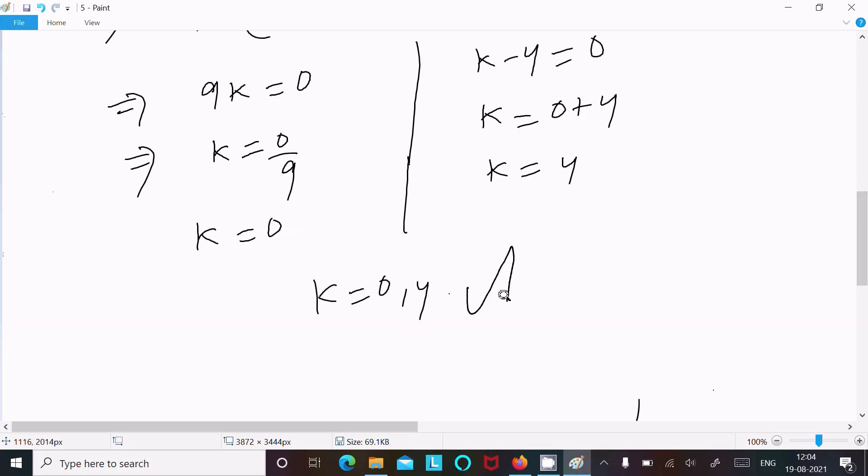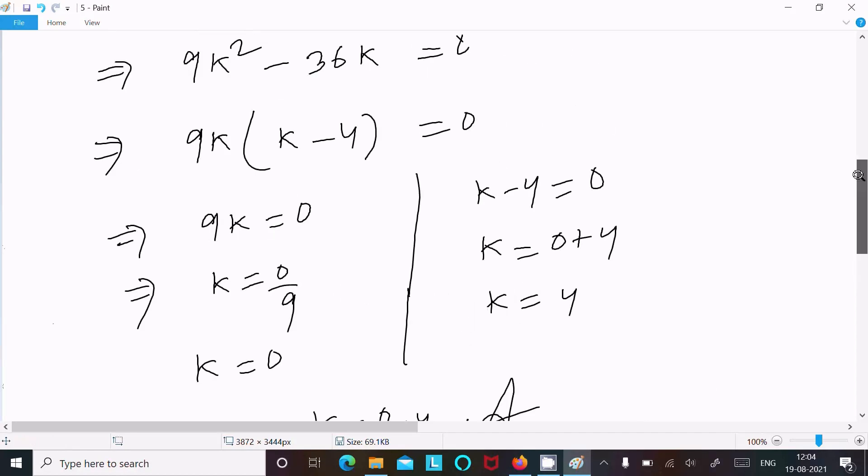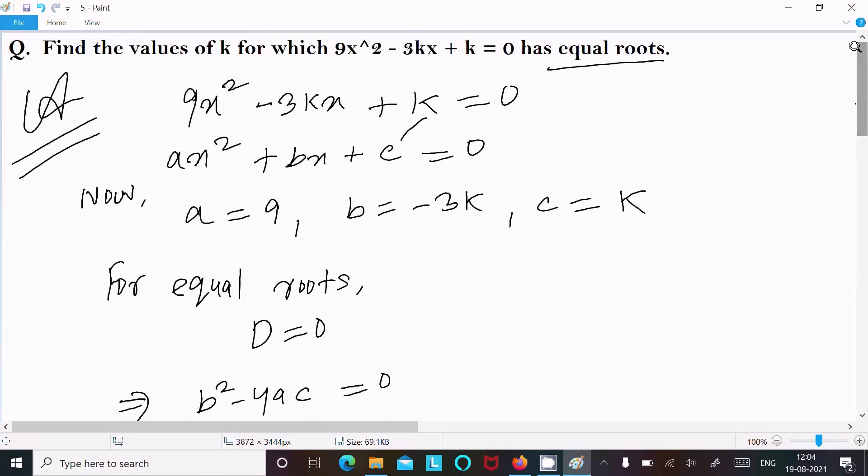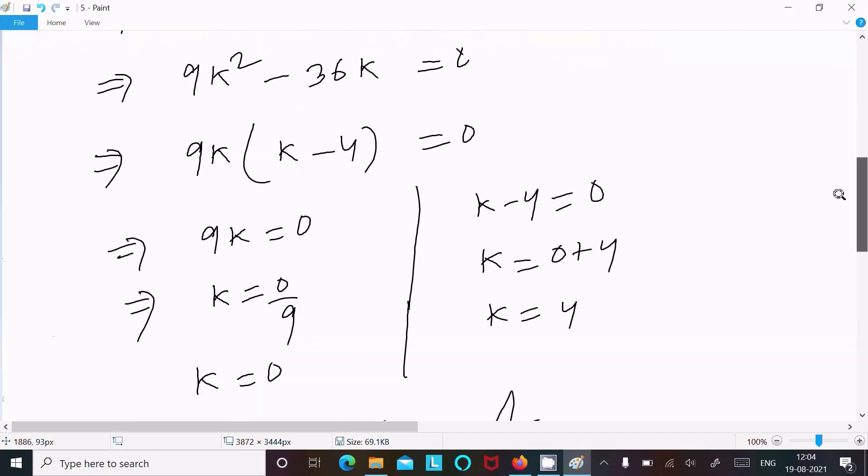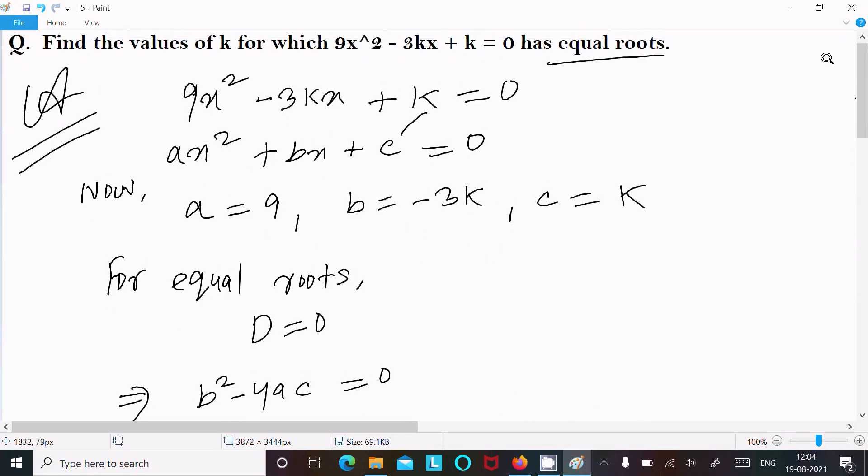0 and 4 are the answers of this quadratic equation. This is the way we can find the value of k. So now this video is over, thanks for watching, see you in the next video.